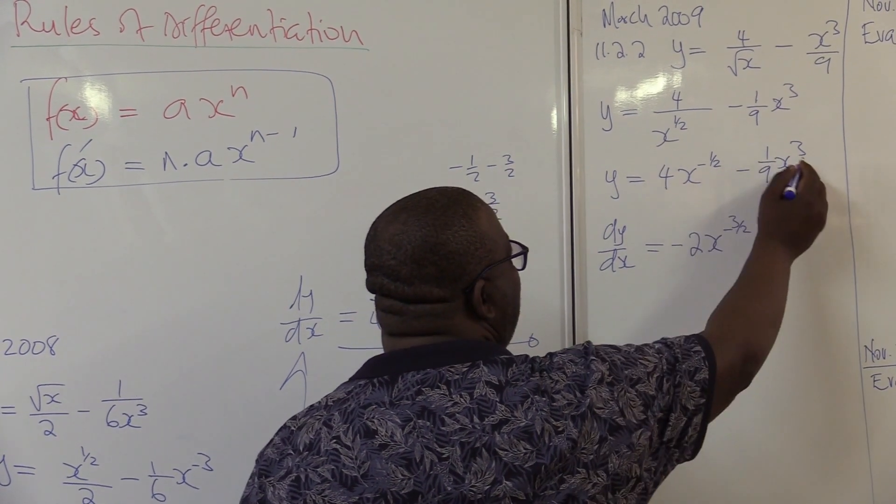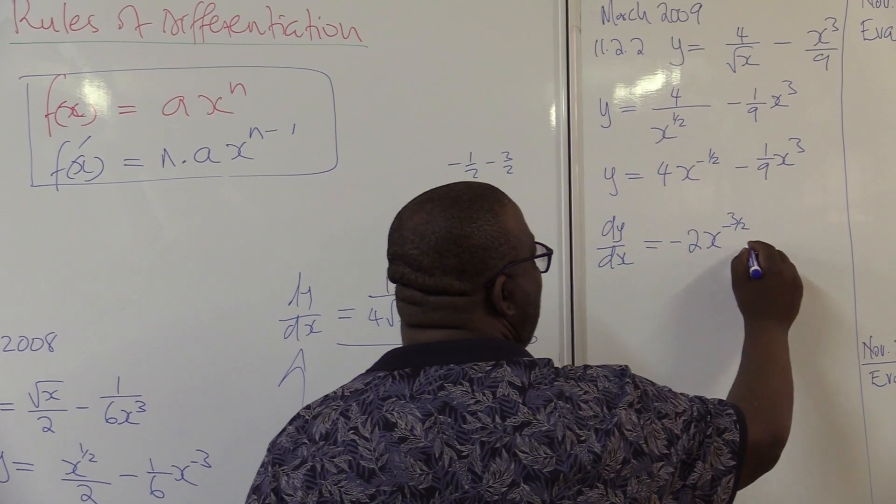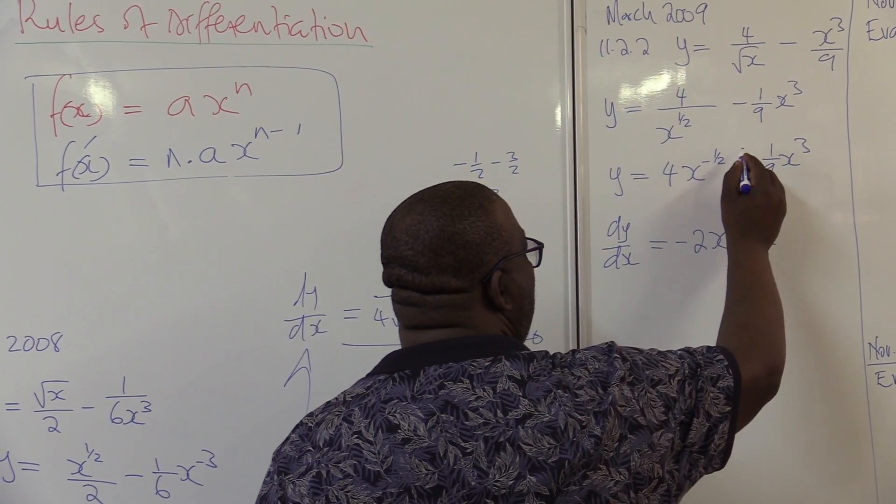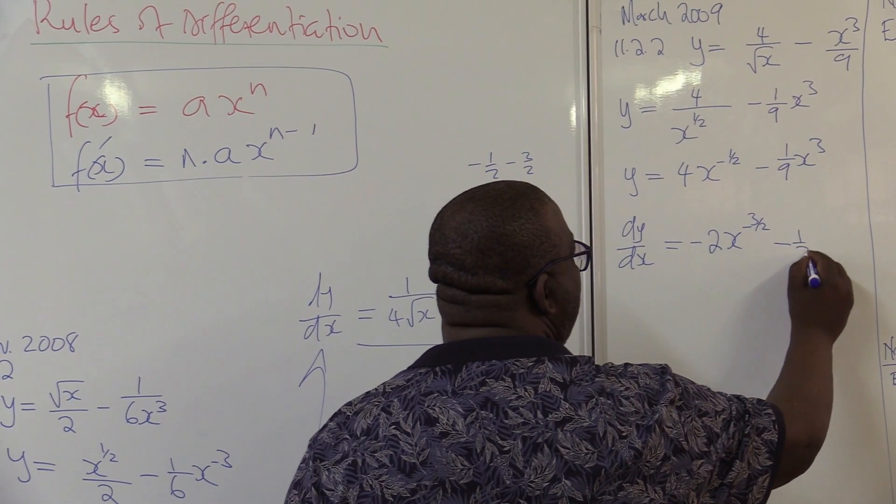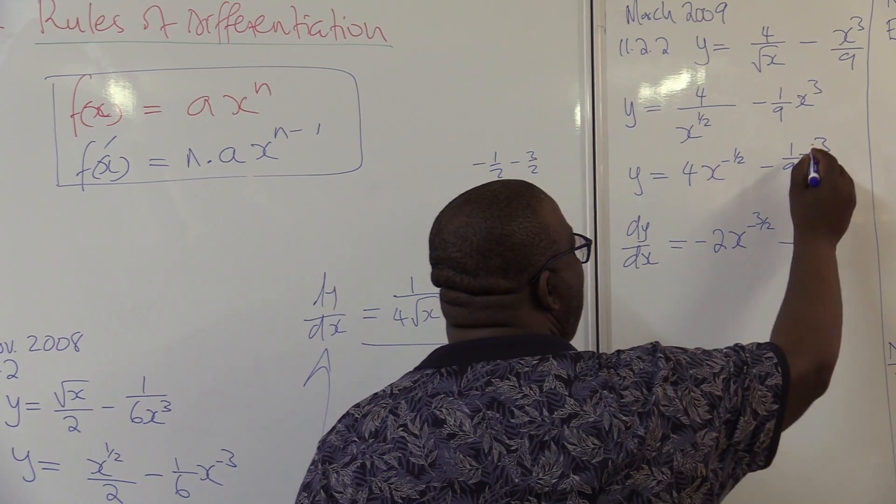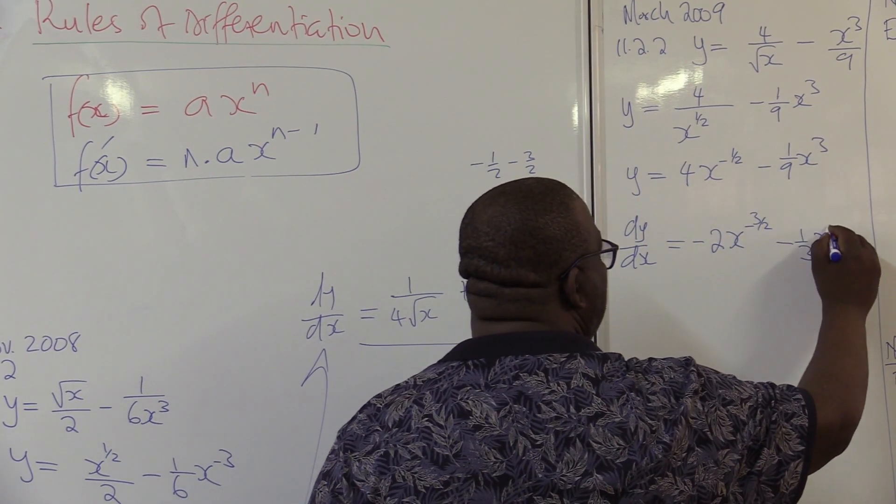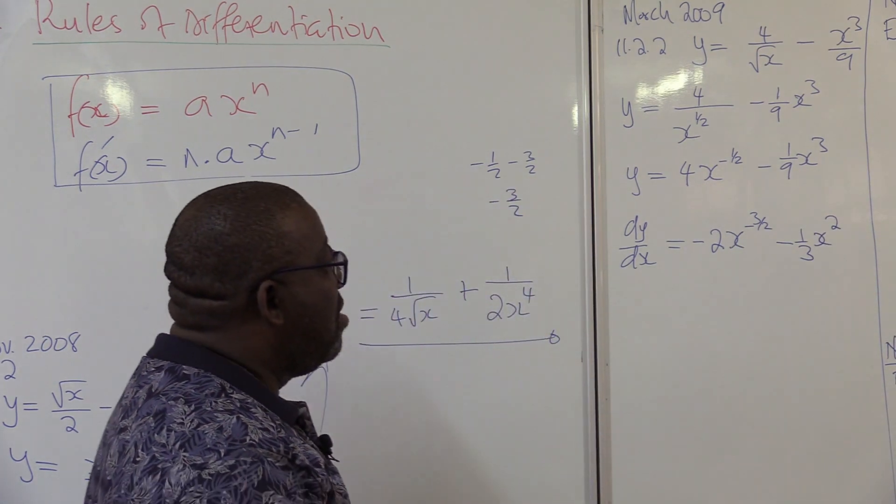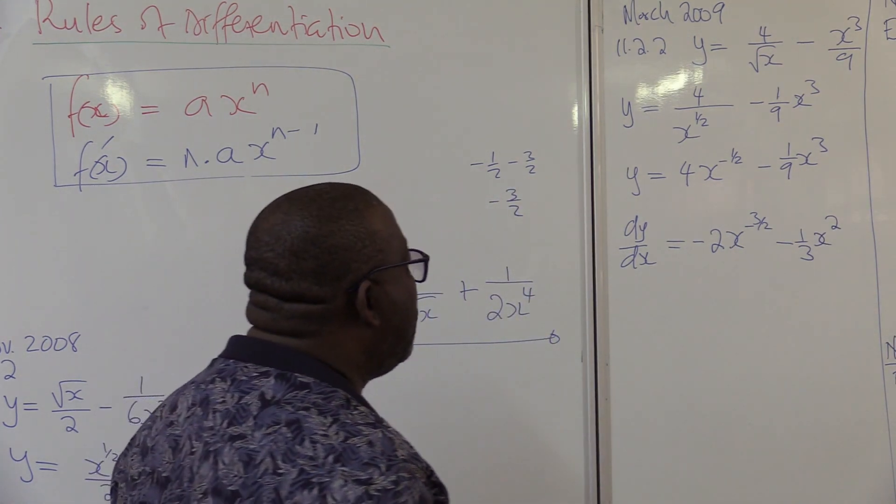Let's look at this one. This times this. It will give us minus, we've got 3. It's 1 over 3. x to the power 3 minus 1 will give us 2. That's what we have. This is what will be our derivative. Let's move on.